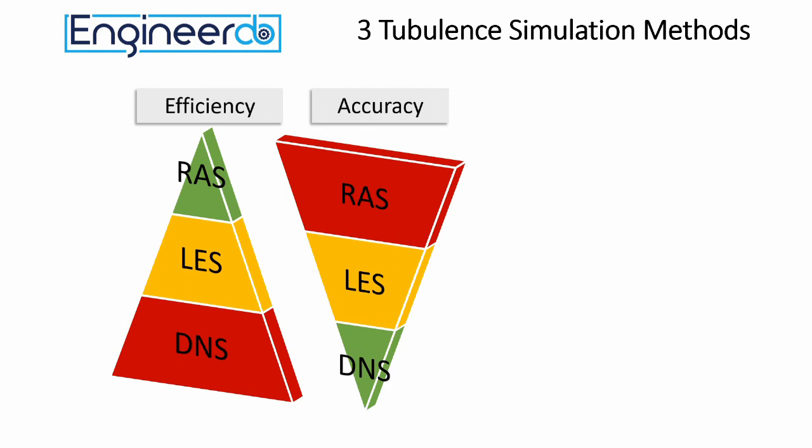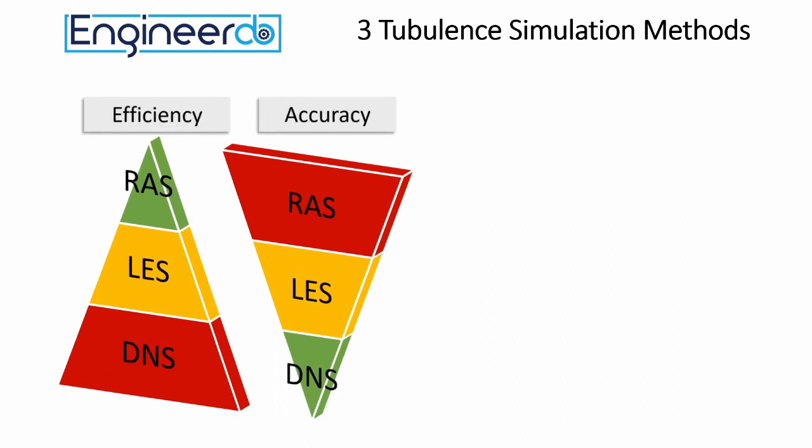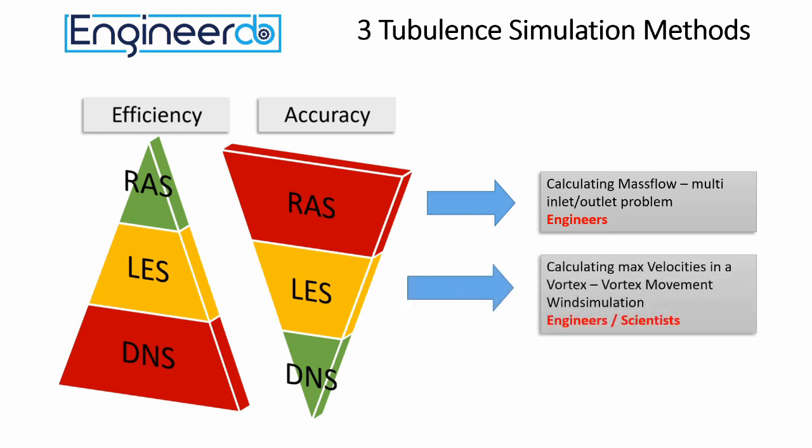The RANS simulation will be used in engineering problems where an engineer needs to know for example the mass flow of a multi-inlet outlet problem. Because LES is way more time consuming, it's used if large vortexes or eddy structures are important for the result.